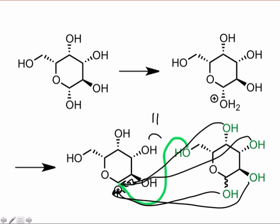In the next webcast, we'll learn how glycosidic bond formation — the coupling of two monosaccharides — happens selectively in biological settings.